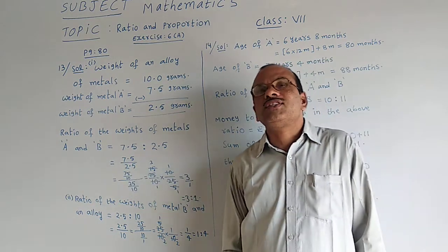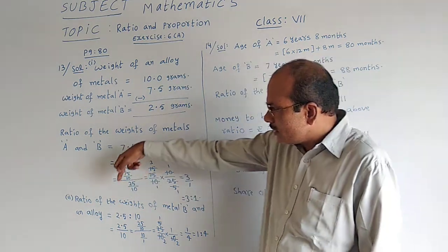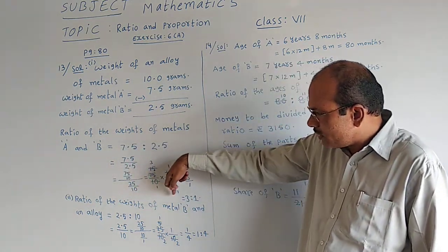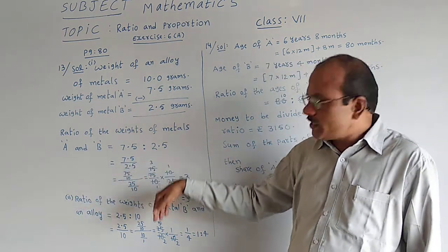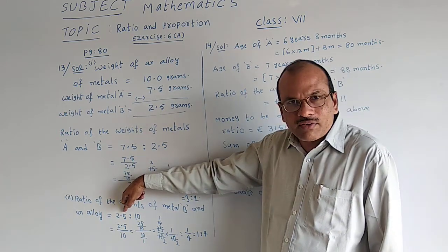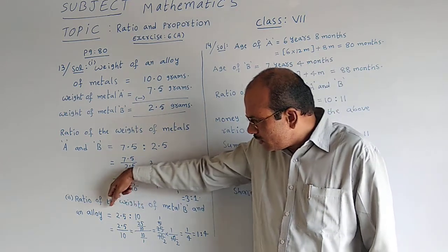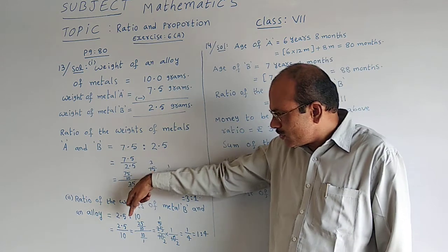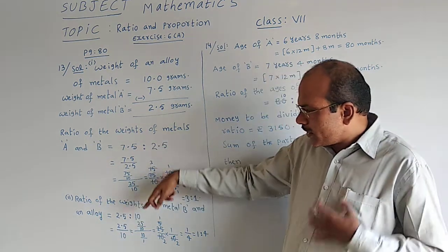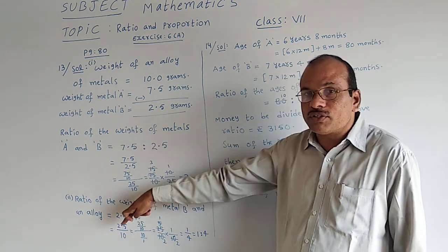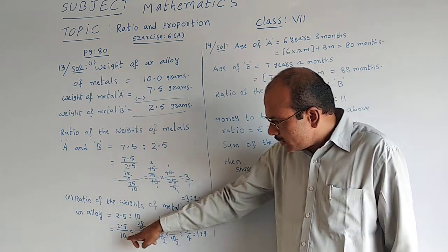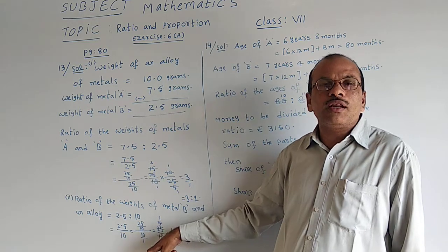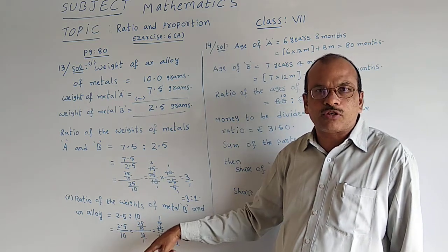Let us see second bit. Ratio of the weights of metals B and alloy. Metal B weight is 2.5 is to alloy weight is 10. So 2.5 by 10 can be written as 2.5 changed as 25 by 10 whole by denominator 10. So that 10 by 1 is written.